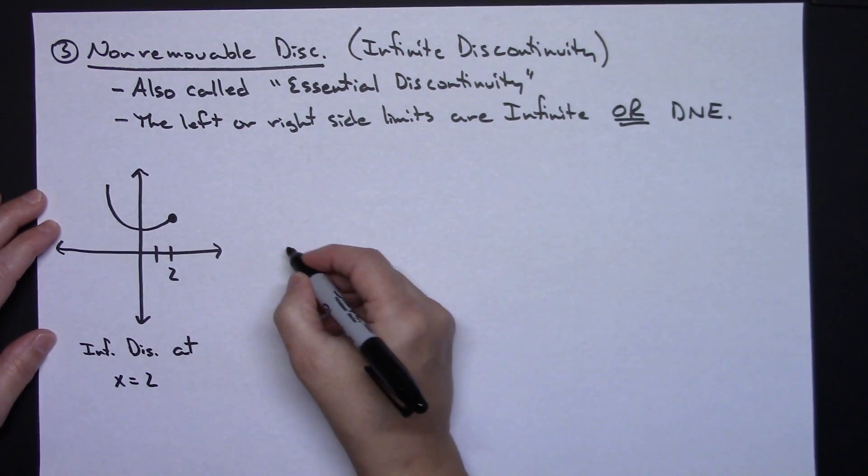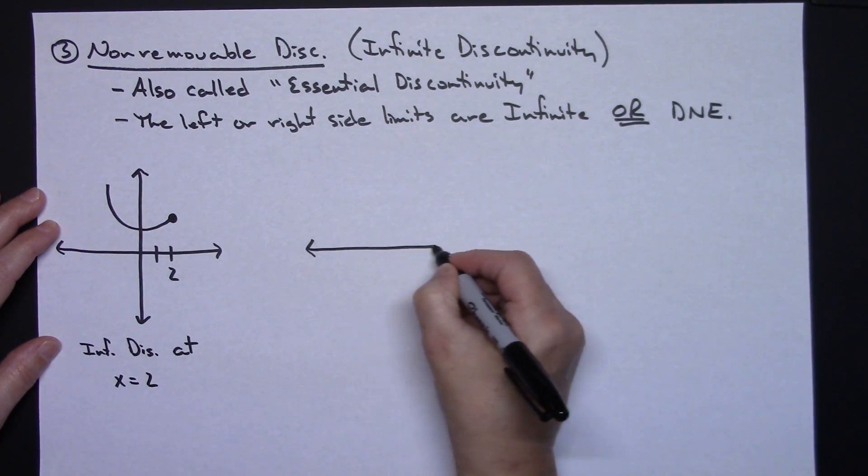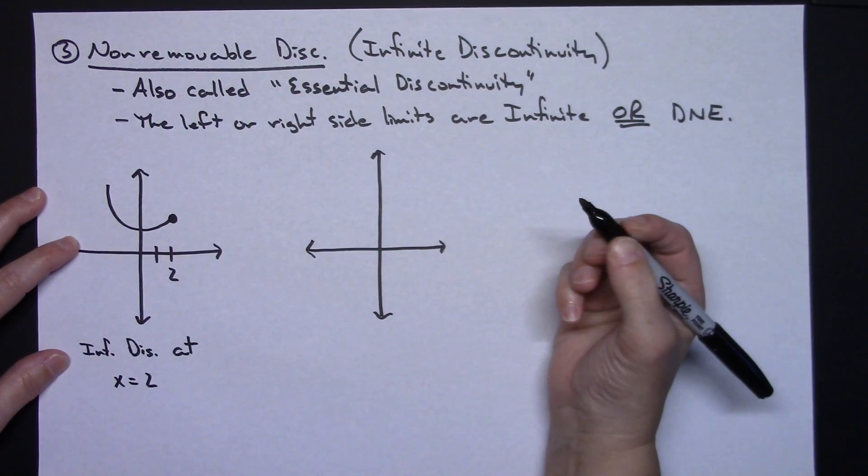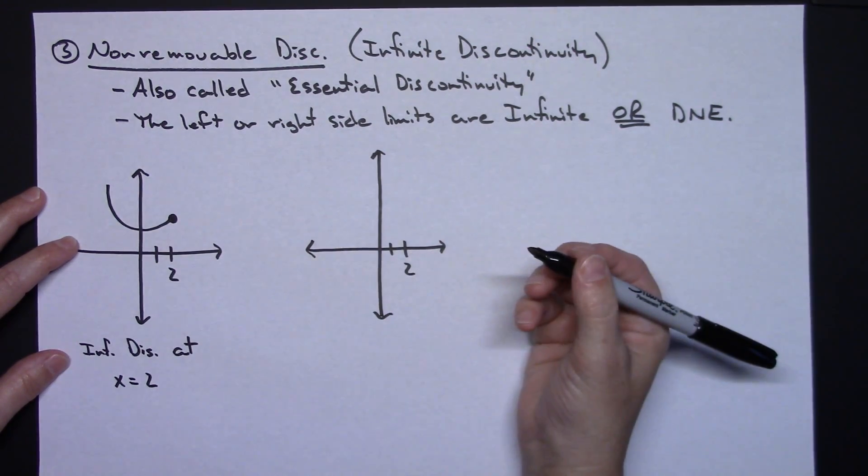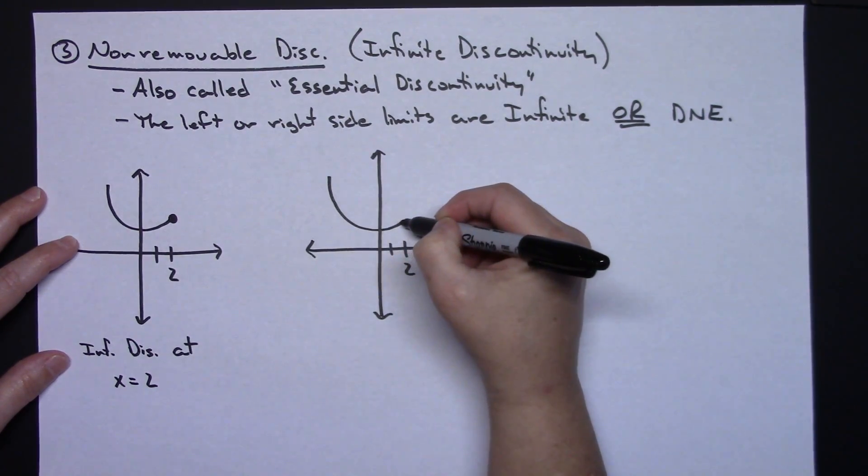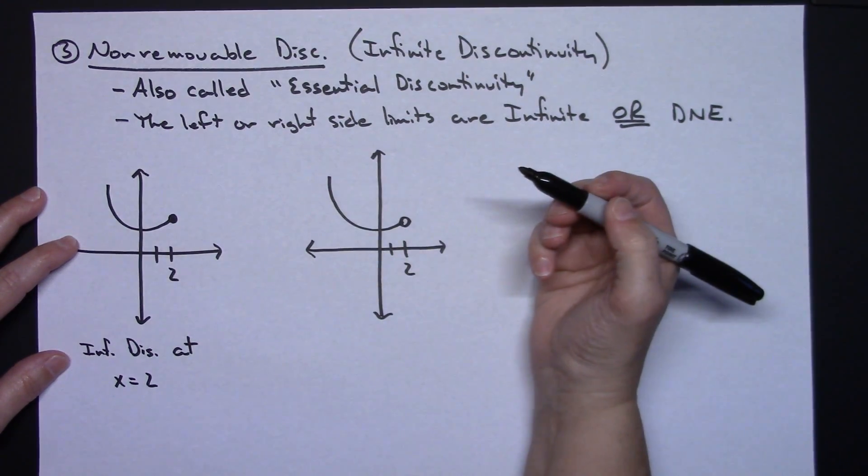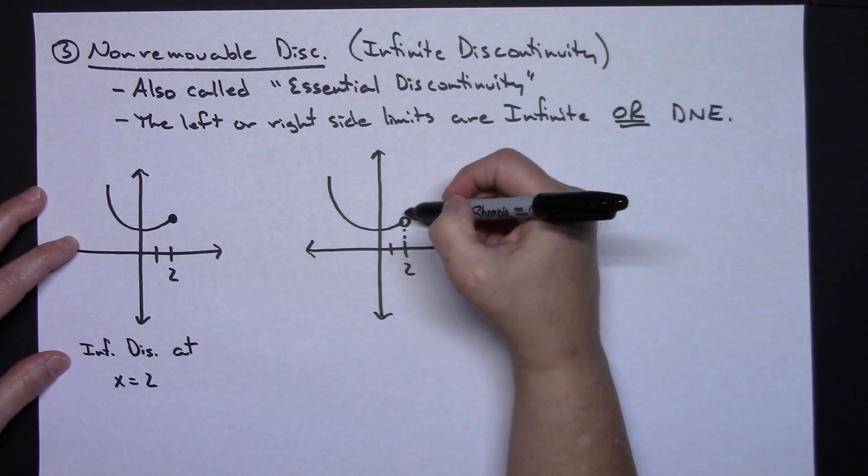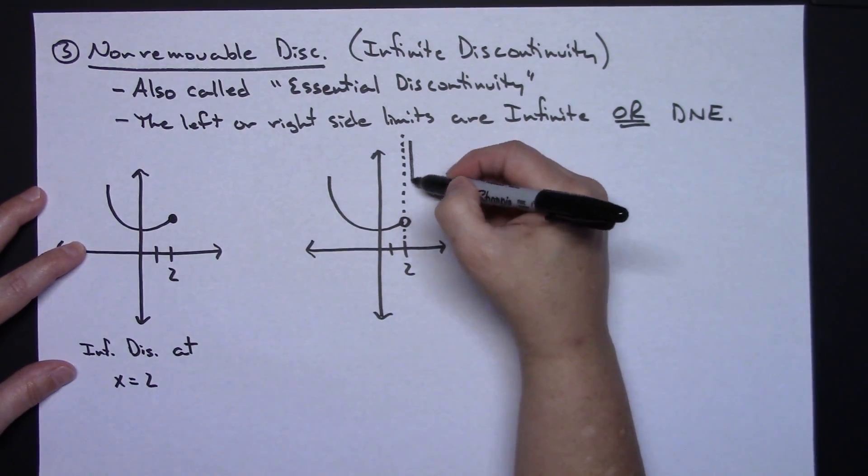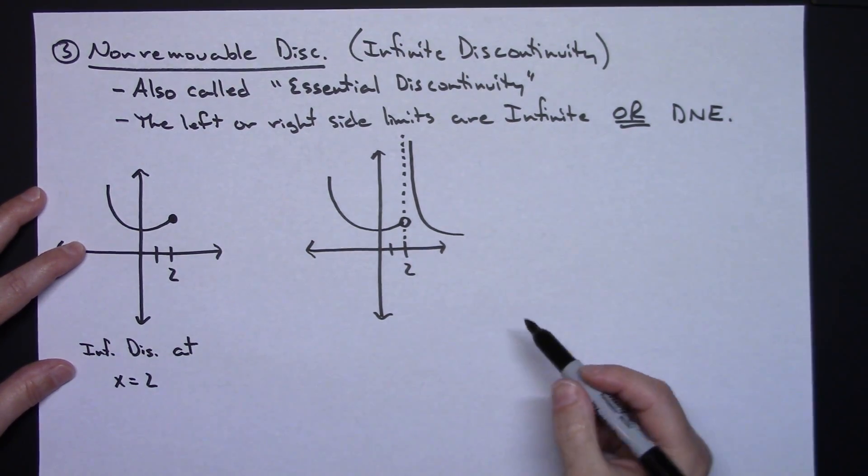Now another possible graph that you might see and you could classify it as an infinite discontinuity. Again, let's do this at 2. Maybe say I've got part of a graph coming in here, open dot there landing at 2, and then maybe there's a vertical asymptote that is occurring right there. So then maybe my graph does something like that.